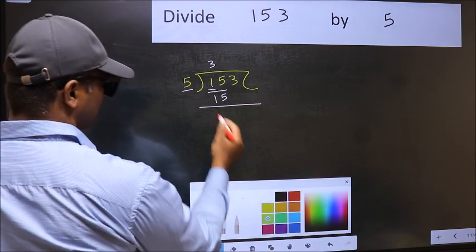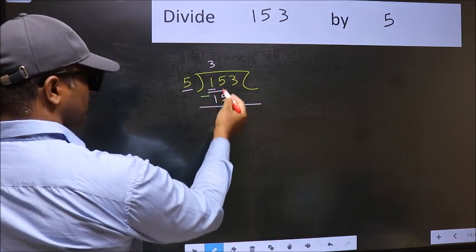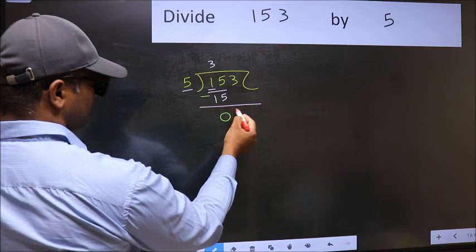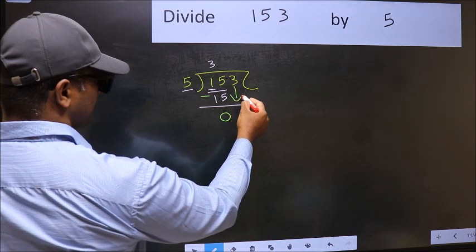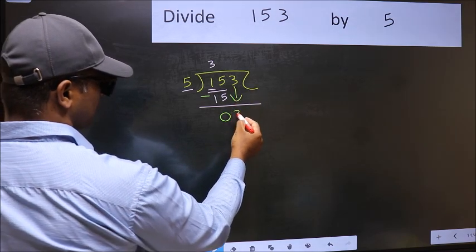Now you should subtract. 15 minus 15, 0. After this, bring down the number beside it. So 3 down.